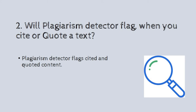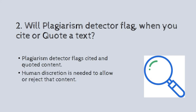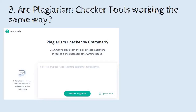The second question: will a plagiarism detector flag content when you cite or quote a text? Yes, plagiarism detectors flag cited and quoted content as well. Human discretion is needed to allow or reject that flagged content, but sadly most journals and universities do not have this human discretion model — they just look at the numbers. Those numbers are generated by matching words and the order of words with available literature through internet sources.